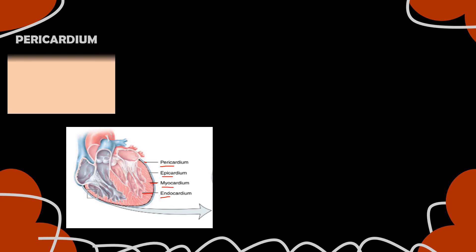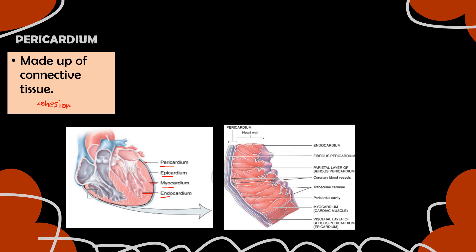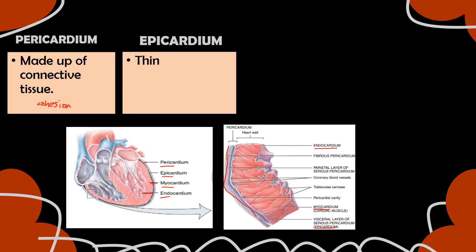Let's see what each layer is made up of. Pericardium is made up of connective tissue, which provides cohesion and internal support to the heart and all the organs around it. The epicardium is made up of a thin layer of elastic connective tissue and fat. Take note: it is elastic and also made up of fat, and this elasticity helps the heart to pump effectively.